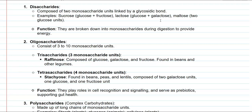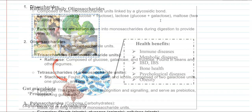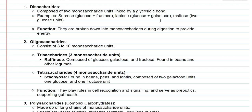Stachyose is composed of two galactose units, one glucose, and one fructose unit. The main function of oligosaccharides in living organisms is that they serve in cell recognition and function in cell signaling. Sometimes they also serve as prebiotics that can support bacterial growth in the gut, thereby establishing good bacteria in the intestine and maintaining gut health when consumed with food.